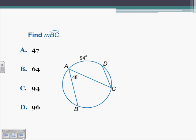Find the measure of arc BC. Arc BC is intercepted by angle A. Angle A is 48 degrees, so the arc has to be twice as big as the angle. Two times 48 is going to give us 96, so our answer would be D.